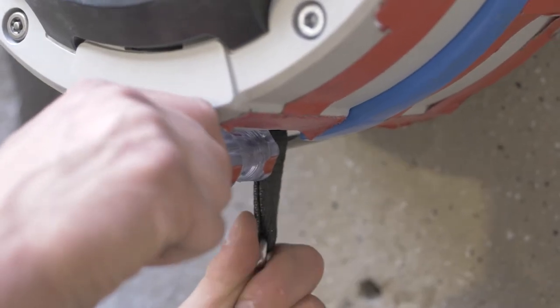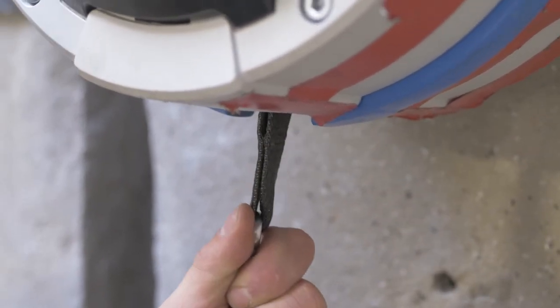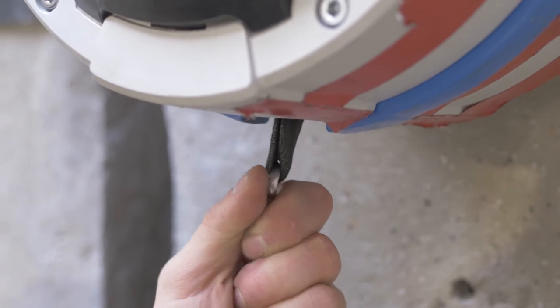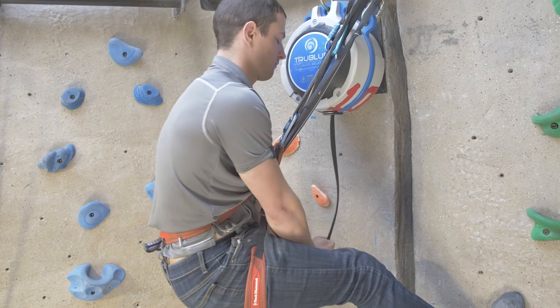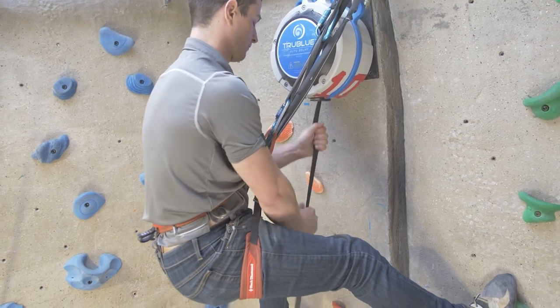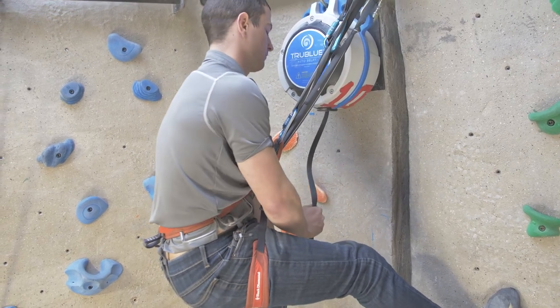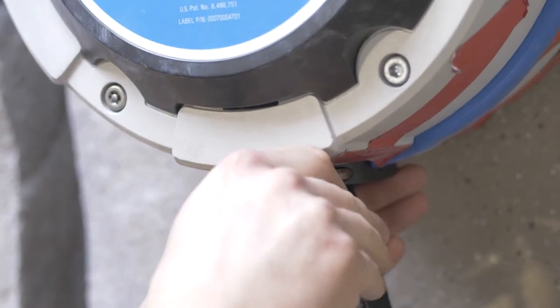Remove the screwdriver and allow the webbing to slowly retract while maintaining alignment and tension with the webbing. Pull out a short bit of webbing and allow it to retract back. Repeat that process two to three times to ensure that the webbing is wound firmly onto the drum.